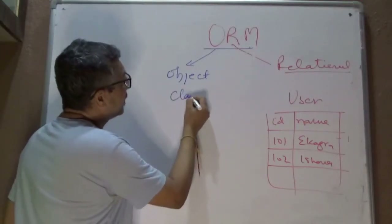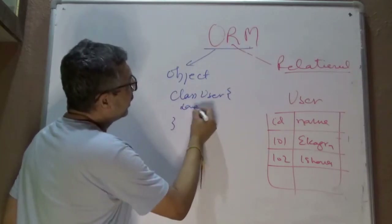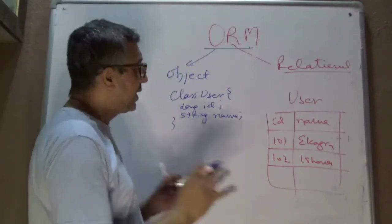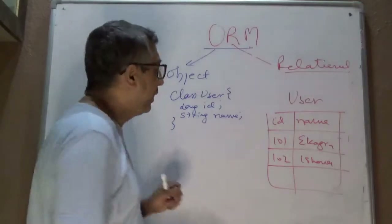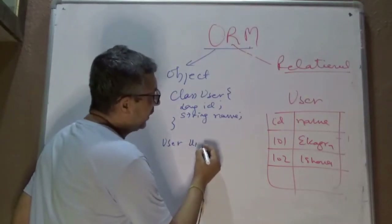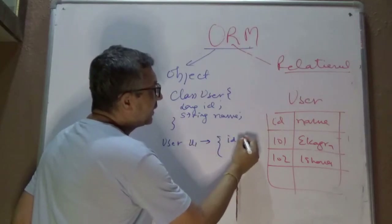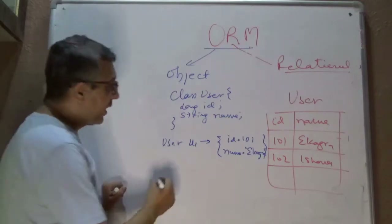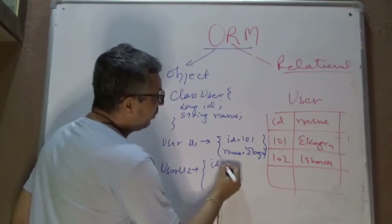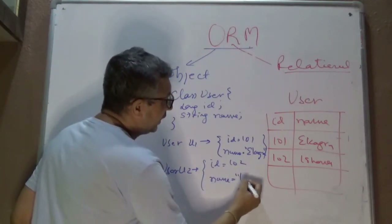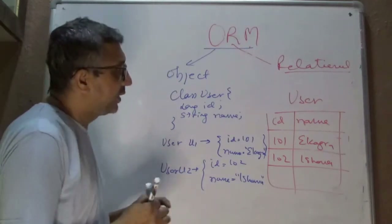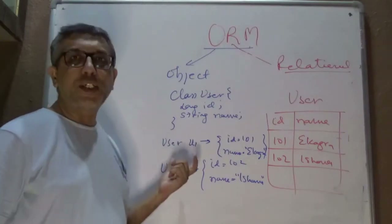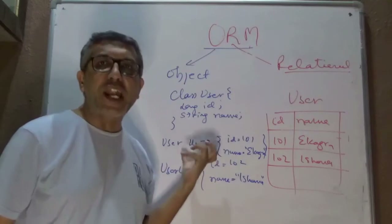What you really want is a class 'User' with attributes like long ID and String name. When dealing with the user with ID 101, you want one User object U1 whose ID is 101 and name is Ekagra. You have a row on the relational side and you convert it into an object with different data points set into different attributes of that object.